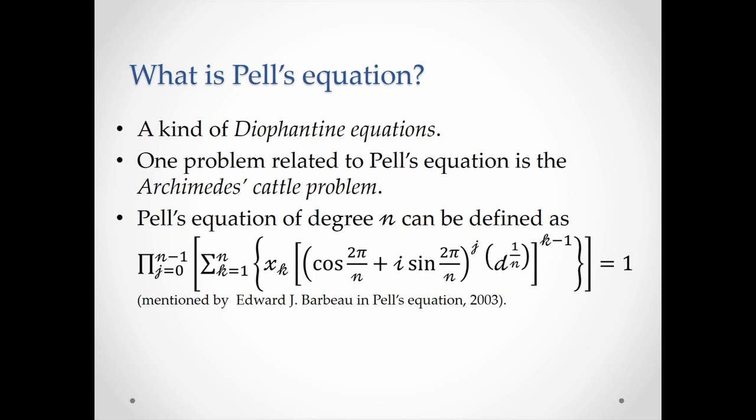Let's start by talking about Pell's equation. Pell's equation is a kind of Diophantine equation — equations in which only integer solutions are allowed. It appeared a long time ago, in the 17th century. One can define the Pell's equation of degree n like this.